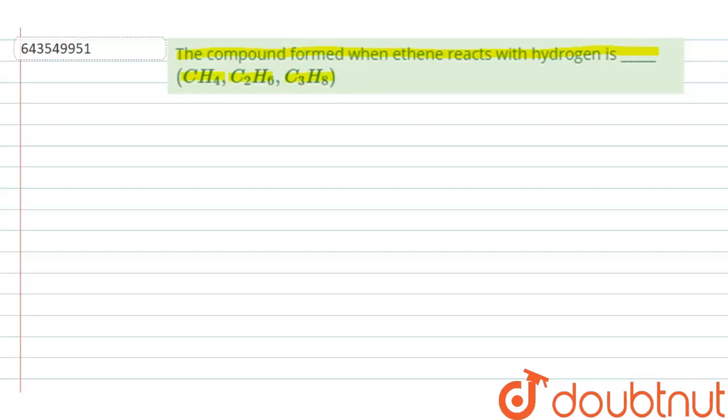The reaction between ethene - ethene is C double bond C and there will be 2H2. This is the ethene molecule and it is reacting with hydrogen.